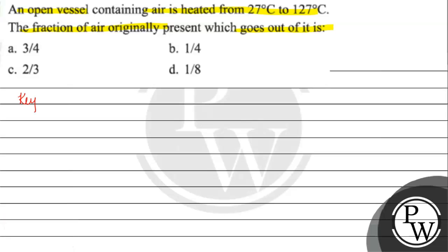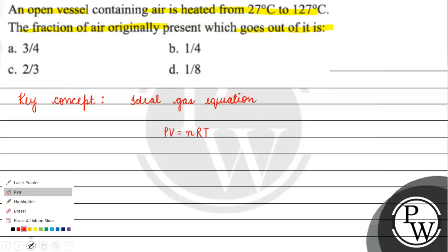The key concept for this question is the ideal gas equation, which is PV = nRT, where P is pressure, V is volume, n is number of moles, R is the universal gas constant, and T is temperature.